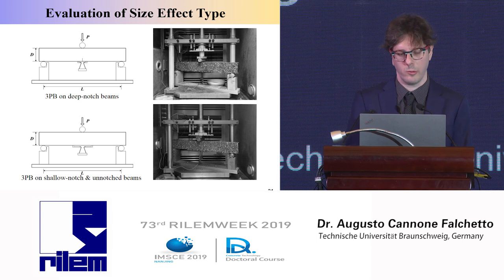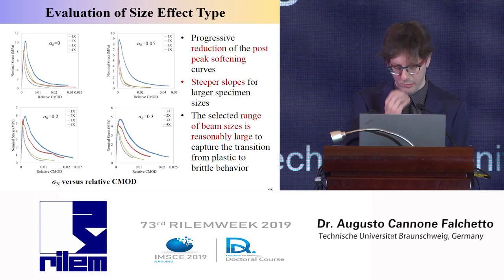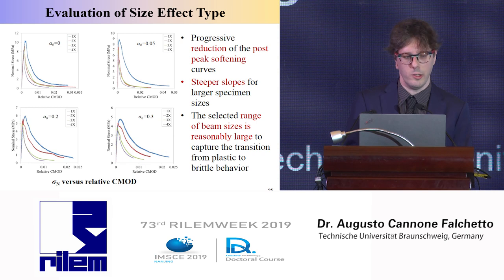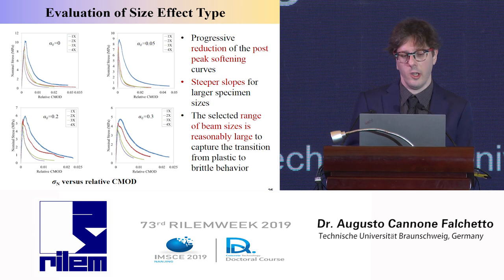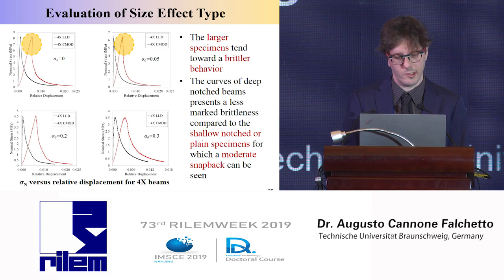With the test, I used CMOD control. Depending on the presence of the notch and the type of notch, I used different types of clip gauges to measure the crack mouth opening. What we observe after the first tests, looking at the evolution of nominal stress as a function of relative CMOD, is a decreasing strength as we move from smaller to larger structures, and a squeezing of the post-peak response toward the y-axis as we move to larger structures, showing that we are capturing differences in both the evolution of strength and the evolution of energy. This is especially visible in the case of the larger specimen sizes with a shallow notch or no notch, for which there is a sort of moderate snapback.